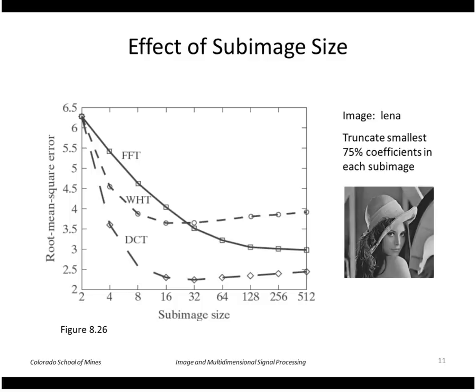We can also look at the effect of the block size. Instead of using an eight by eight block, we could try four by four or 16 by 16, etc. This graph shows that the root mean squared error gets better as you increase the sub-image size until about 16 by 16 or 32 by 32, and then it slowly starts rising again.